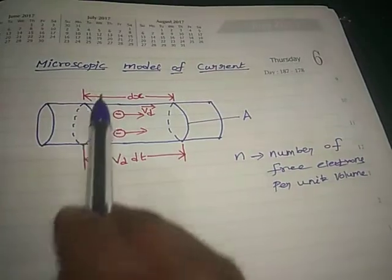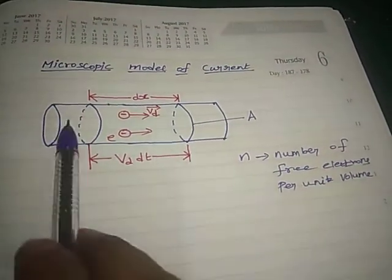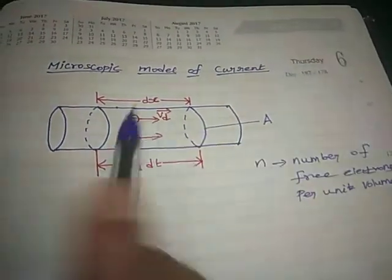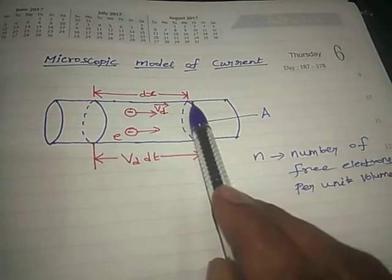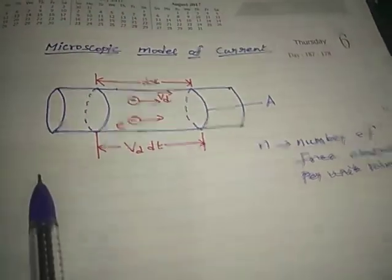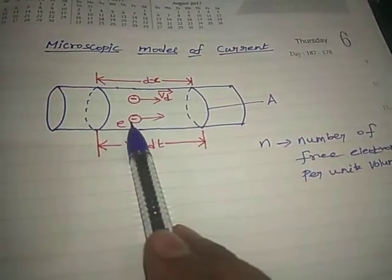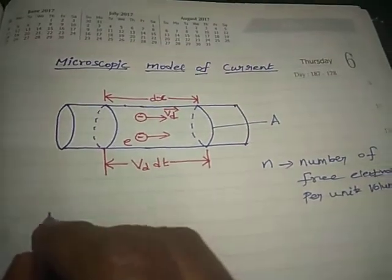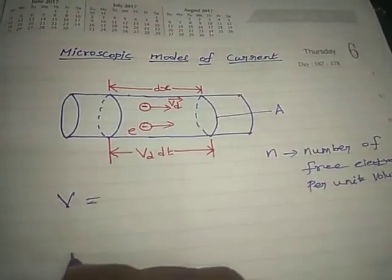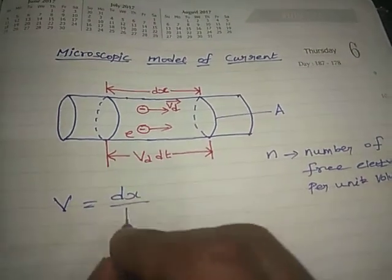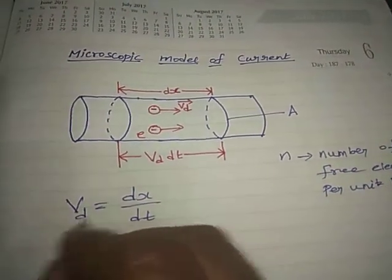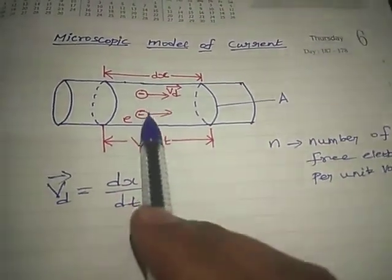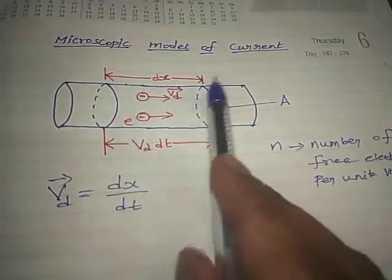Consider a small distance dx in the conductor. The electrons cross the distance dx in a time dt. The drift velocity formula is velocity equal to rate of change of displacement, so the electrons are crossing the distance dx in time dt, giving vd = dx/dt.